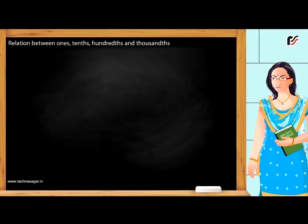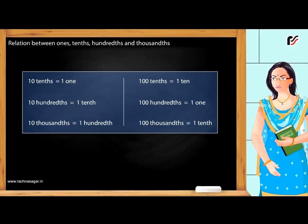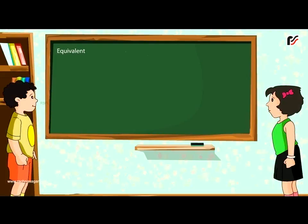Relation between 1s, 10s, 100s and 1000s. 10 tenths = 1. 10 hundredths = 1 tenth. 10 thousandths = 1 hundredth. 100 tenths = 1 ten. 100 hundredths = 1. 100 thousandths = 1 tenth.